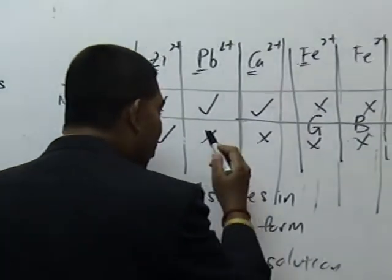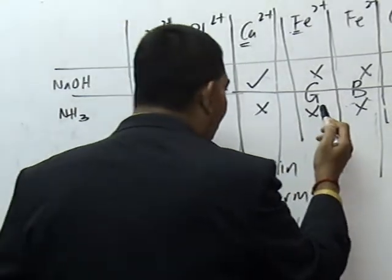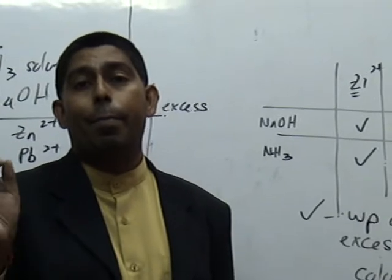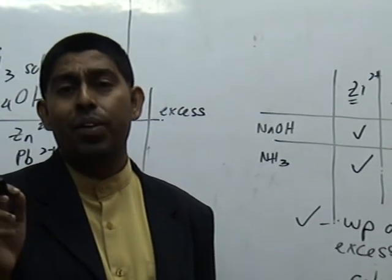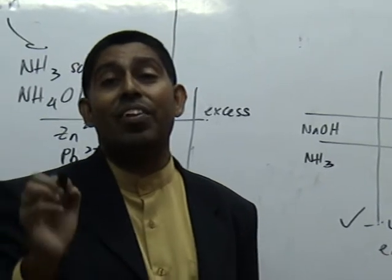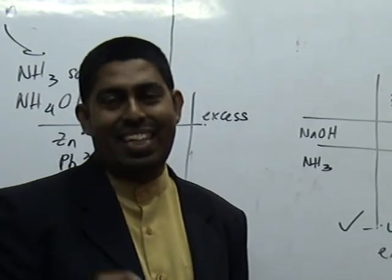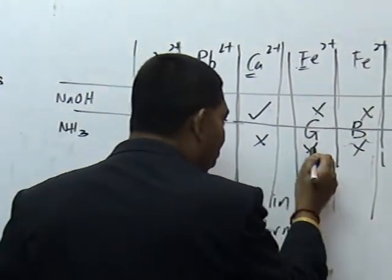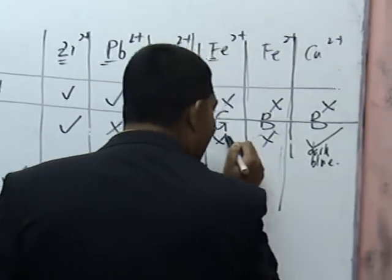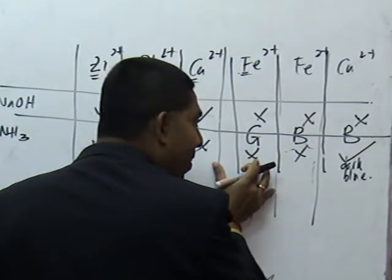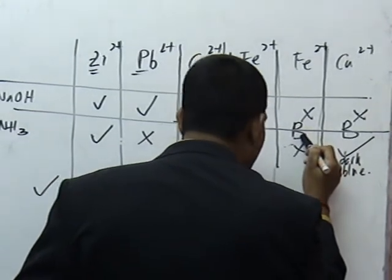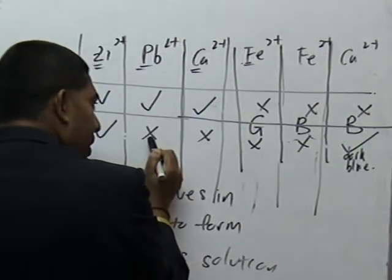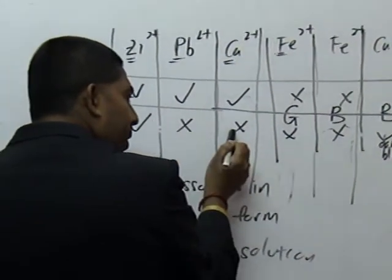Now, the rest of it students over here, the cross. All these cross means it forms precipitate. It forms precipitate that does not dissolve in excess. That's the meaning. So, as you can see here. Here, white precipitate. Also here, white precipitate. That does not dissolve in excess. The one that I put here, the B and the G here.